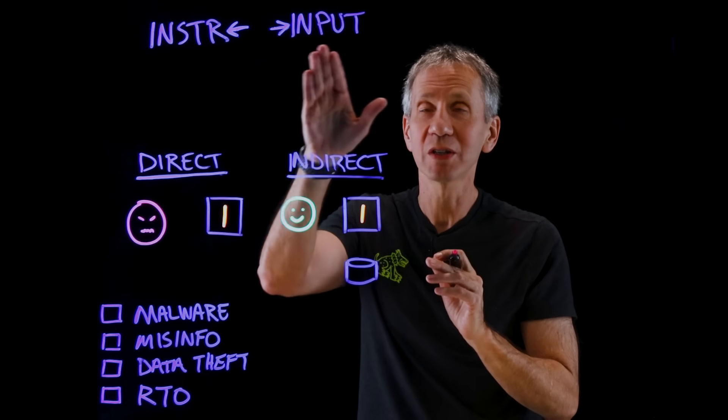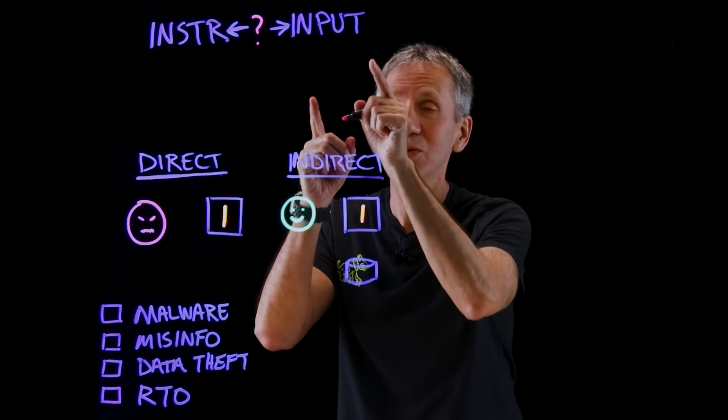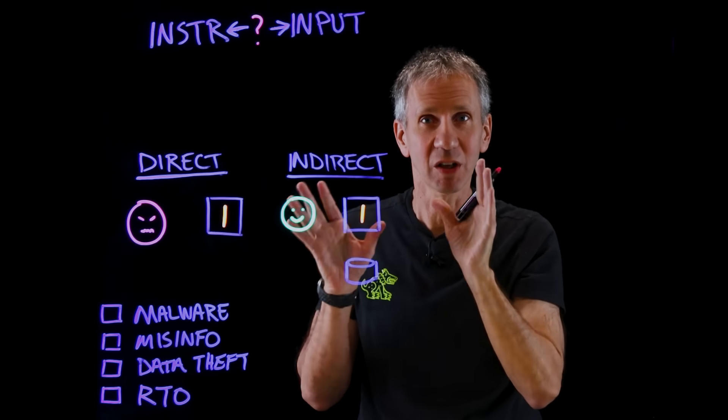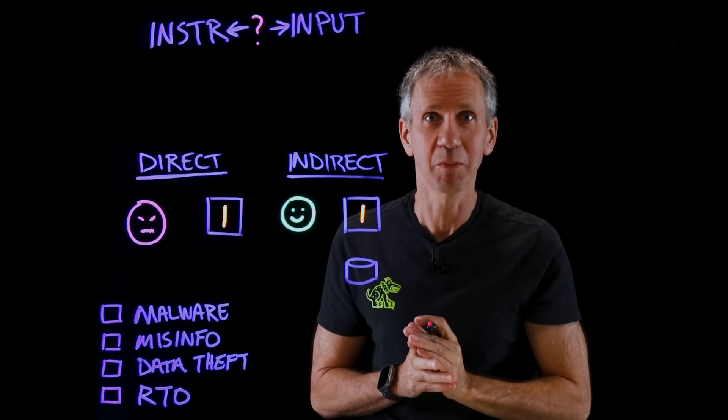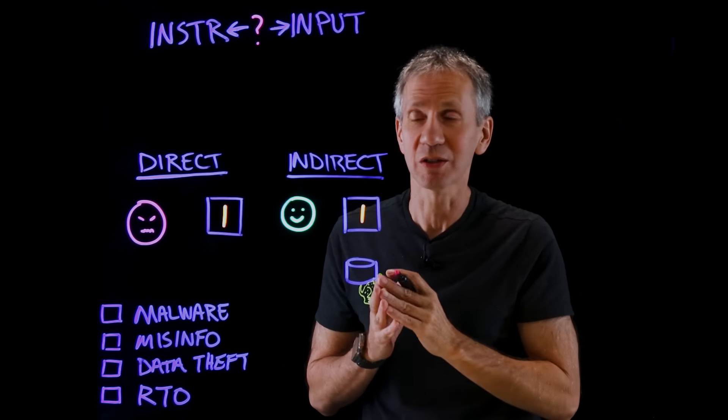In fact, the distinction between what is instructions and what is input is a lot murkier, because we, in fact, use the input to train the system. So, we don't have those clear, crisp lines that we have had in the past. That gives it a lot of flexibility. It also gives it the opportunity to do this kind of stuff.